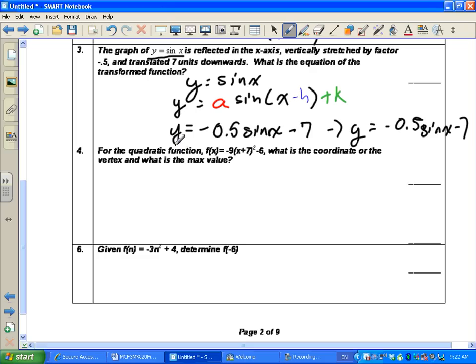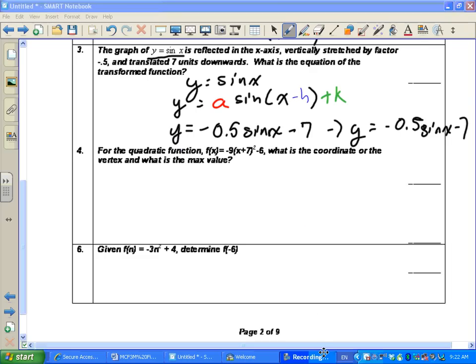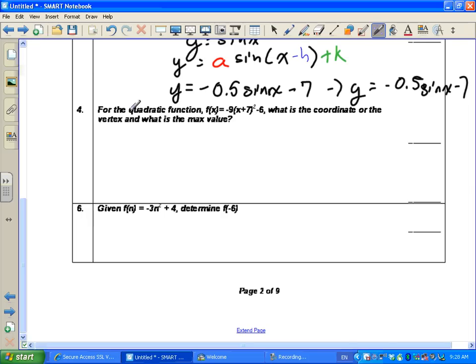Okay, question number 4 says that for a quadratic function, and if you guys remember, a quadratic function is y equals x squared. It's a parabola shape on that graph. They've given us this equation. What are the coordinates of the vertex, and what is the max value? So the coordinates of the vertex, when we go to our equation, y equals a times x minus h squared plus k. The coordinates of the vertex do not deal with a. The coordinates of the vertex only deal with our h value and our k value. Our h value will be the x coordinate of the vertex, and our k value will be the y coordinate of the vertex.